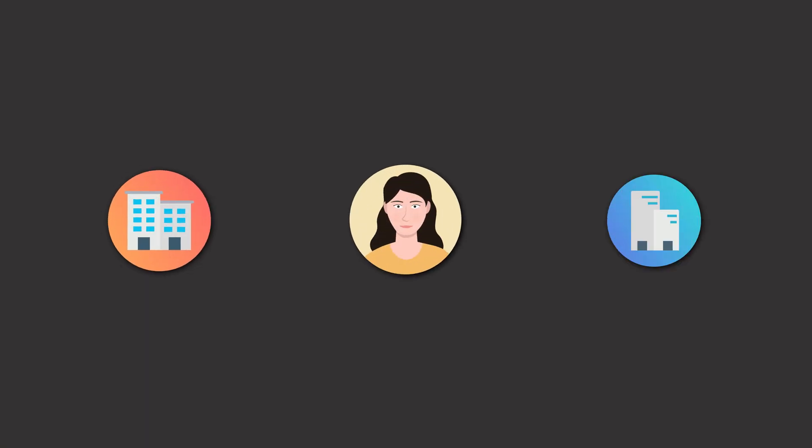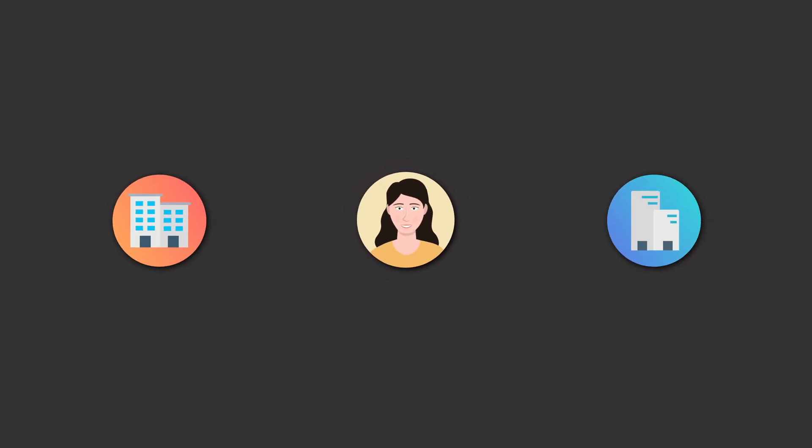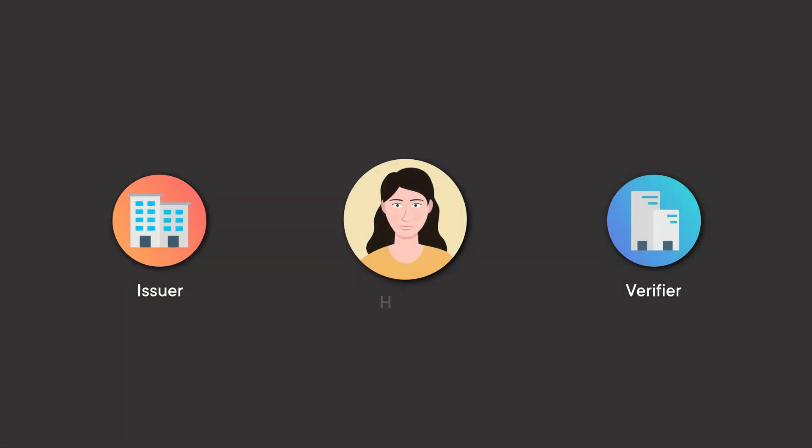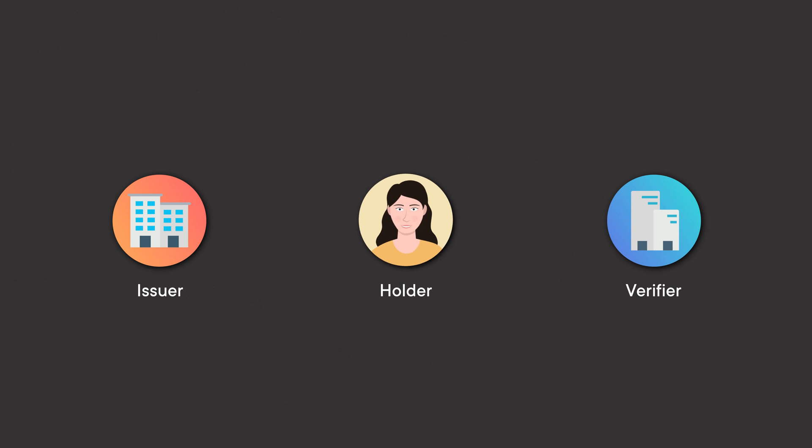One thing that really stands out here is the difference in roles. We have someone in the middle — the centre of the transaction — that the information actually relates to. Traditionally we've had the concept of issuers, who create and send out information, and verifiers, or relying parties, who take that information and use it in their context. But in the decentralised model we're introducing a third role called the holder — the person who is the subject of the credential — and it puts them in a real active position as part of that transaction model.